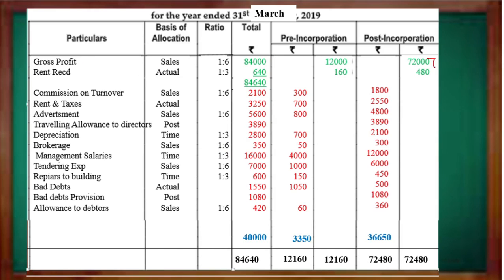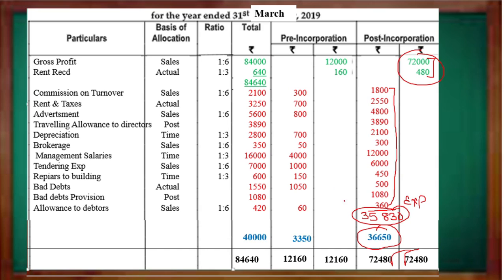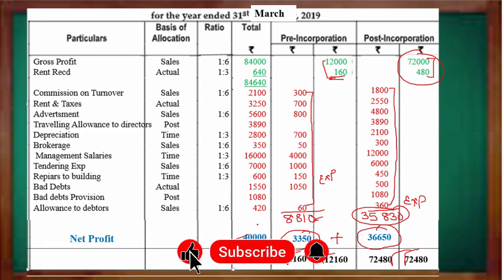Now find out Profit and Loss. Total both the credit sides — the total is 3580 and 3580. Capital profit goes to capital reserve because this is the Pre-incorporation profit. If the total Pre profit is 40,000, it is called Net Profit for Post. I hope you have understood. Please share this on your Instagram. Thank you so much, have a nice day, bye bye.